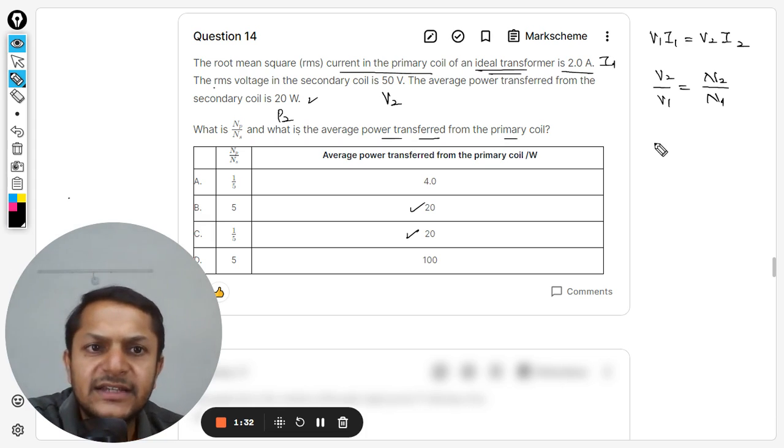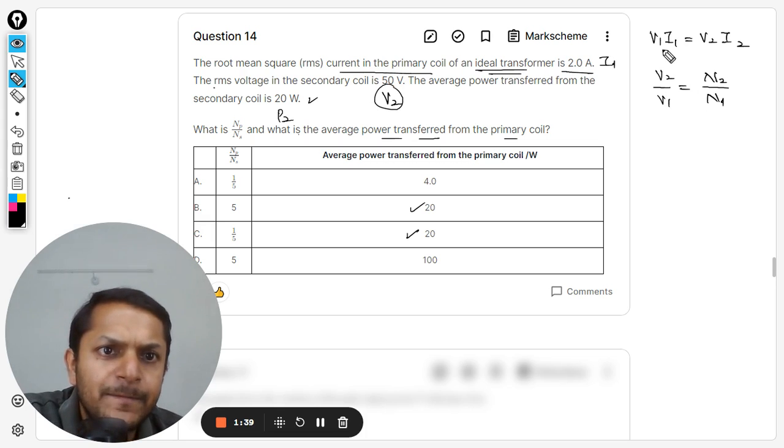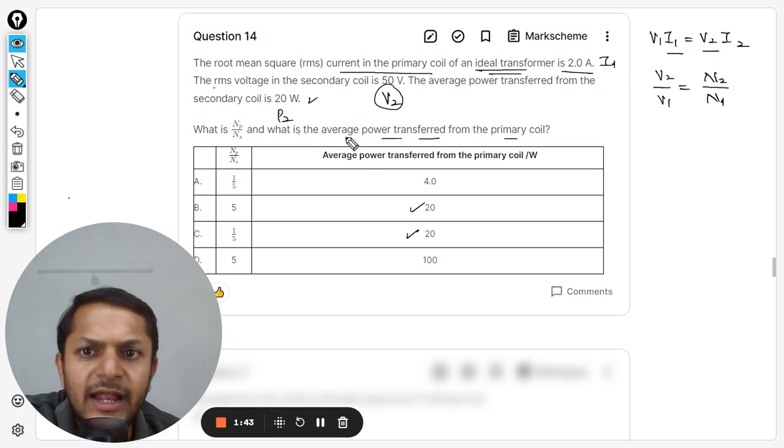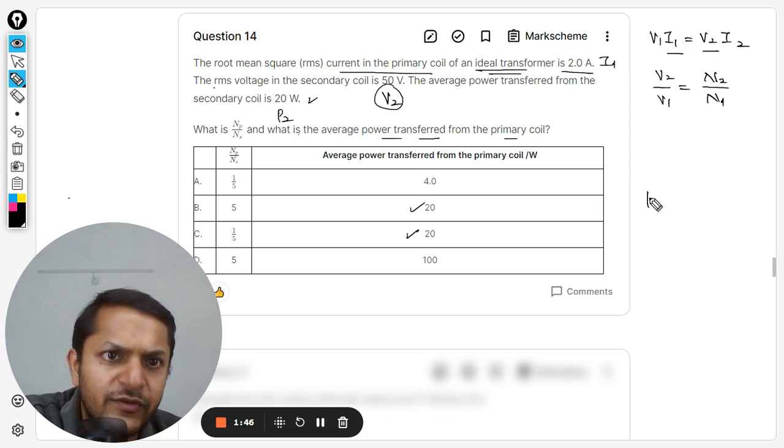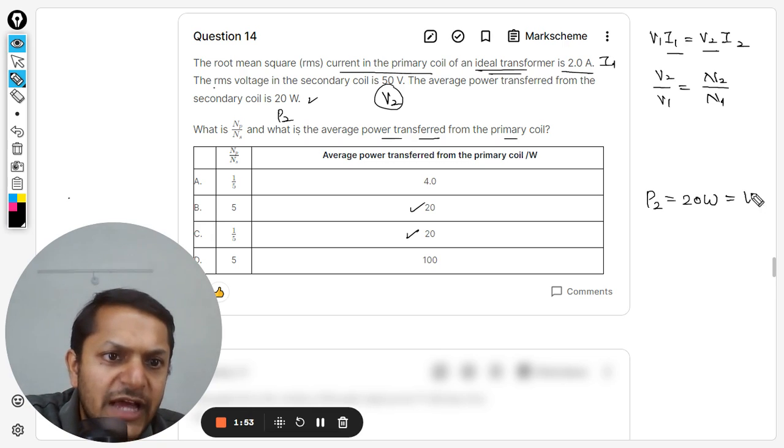We want to find np by ns, so clearly we have to find v2 by v1. So v2 is known to us already—v2 is known, and i1 is known, and p2 is also known. We have to find—p2 is known, so we can say 20 watts, which is actually the p1 also.